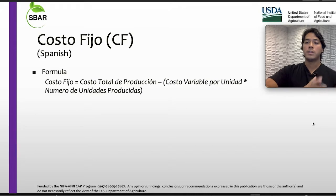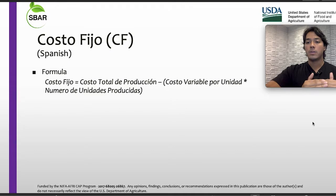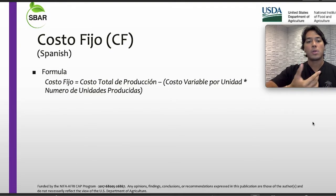Para el costo fijo, su fórmula sería igual a costos totales de producción menos, en paréntesis, costo variable por unidad por número de unidades producidas.